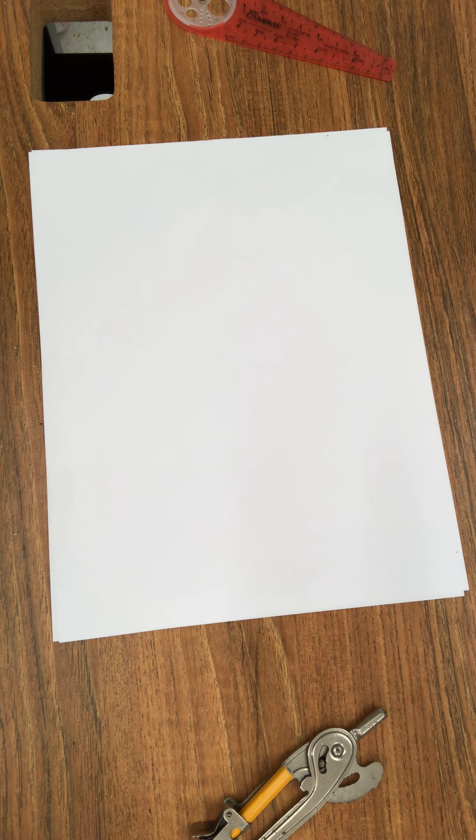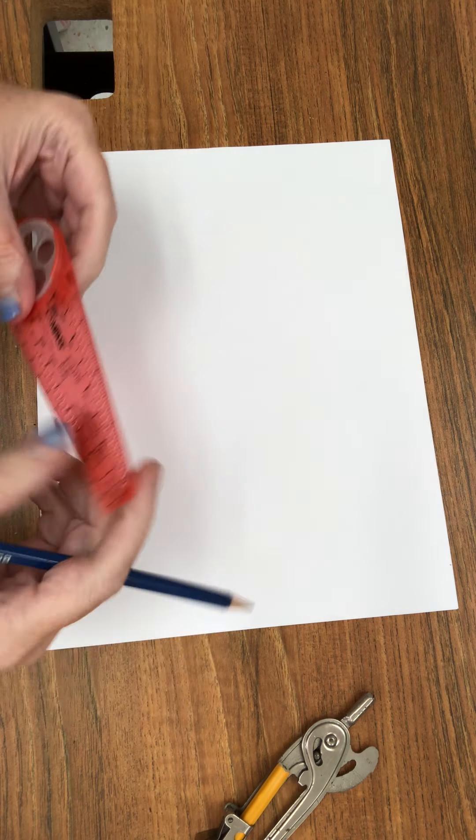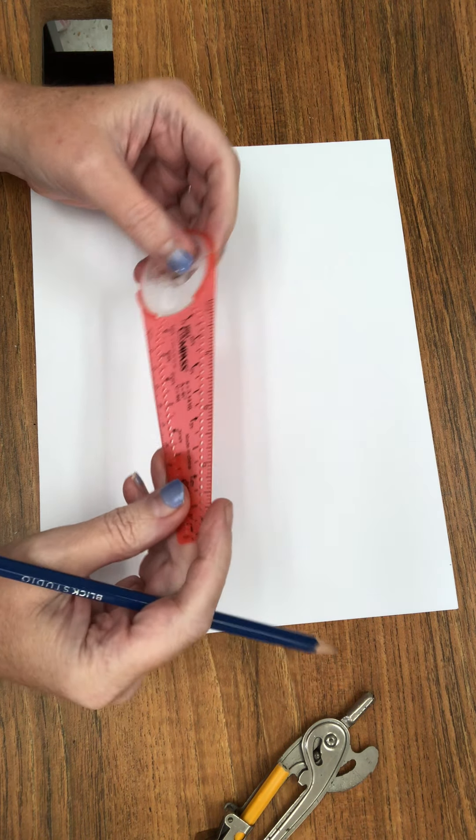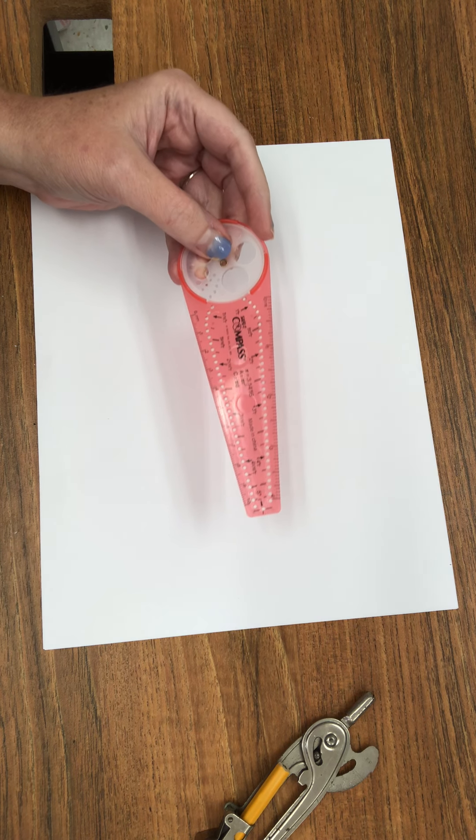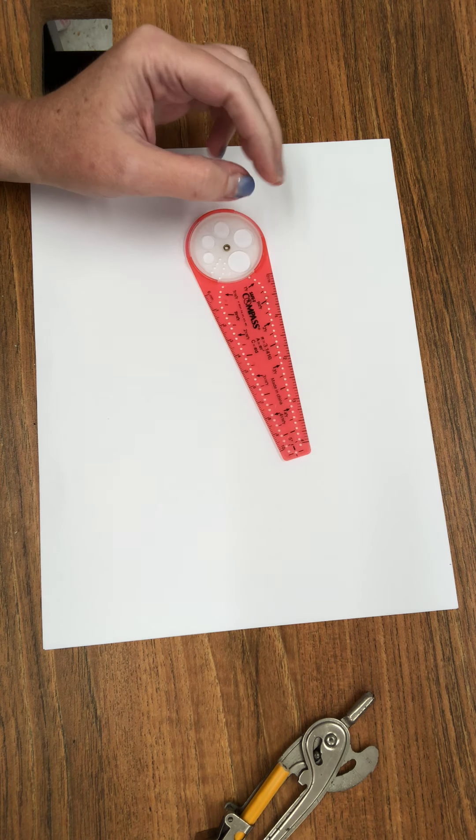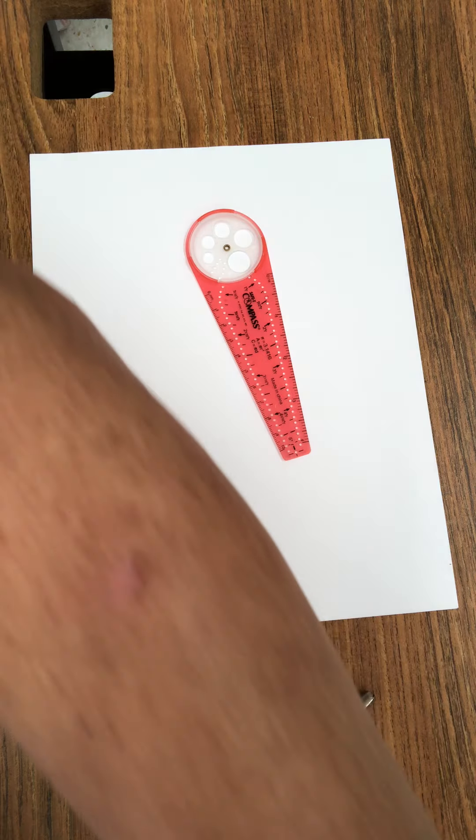Okay sixth graders, so earlier today I asked you to begin thinking of designs for your Orphism lesson, and I was showing everybody how to use this compass. So if you're at home and you don't have one of these, that's okay. Like I said, you can use circular things from around home, like cups.